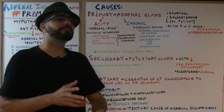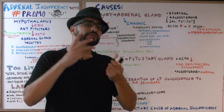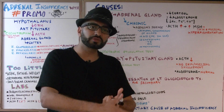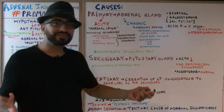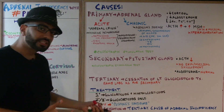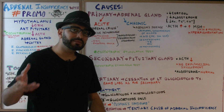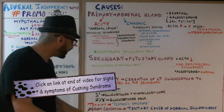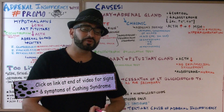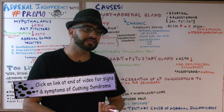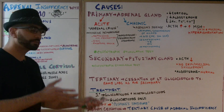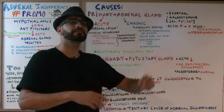For treatment: in primary adrenal insufficiency, the adrenal gland isn't functioning, so both glucocorticoids and mineralocorticoids are missing — you replace both cortisol (glucocorticoid) and aldosterone (mineralocorticoid). In secondary or tertiary causes, you only need to supply glucocorticoids, not mineralocorticoids. The toxicity of too much glucocorticoids leads to Cushing syndrome — large belly, buffalo hump, moon facies, hypertension, hyperglycemia, osteoporosis, and amenorrhea in females. Remember, abrupt cessation of glucocorticoid therapy results in tertiary adrenal insufficiency.